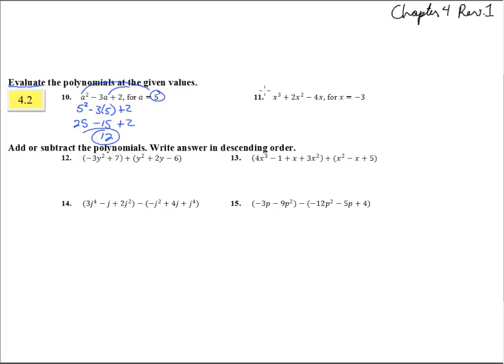There we go. Well, number 11, x cubed plus 2x squared minus 4x for x is negative 3. So we're going to stick that in and have negative 3 to the third power plus 2 times negative 3 squared. Now that squared only goes on the negative 3, that's important to note, plus minus 4 times negative 3.